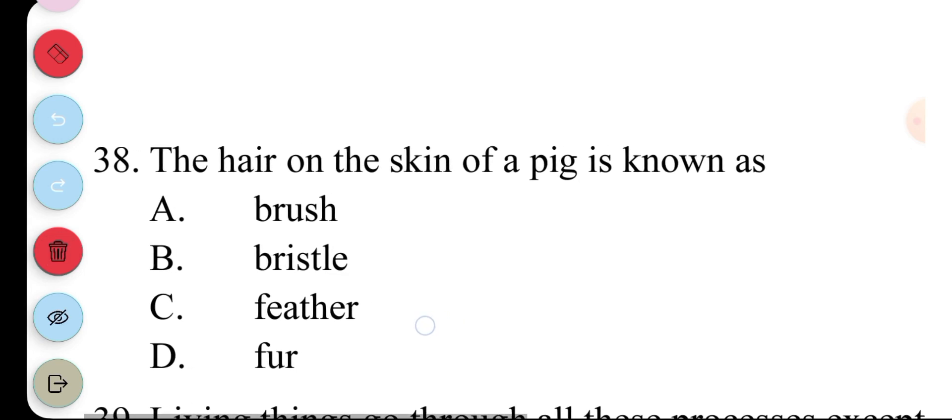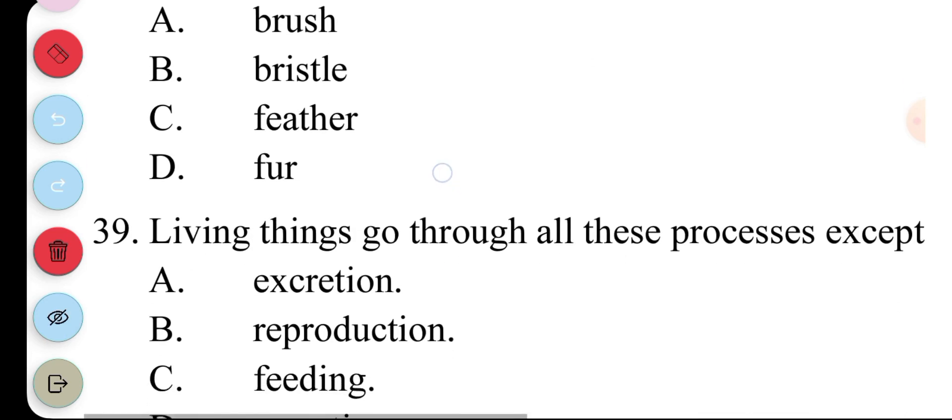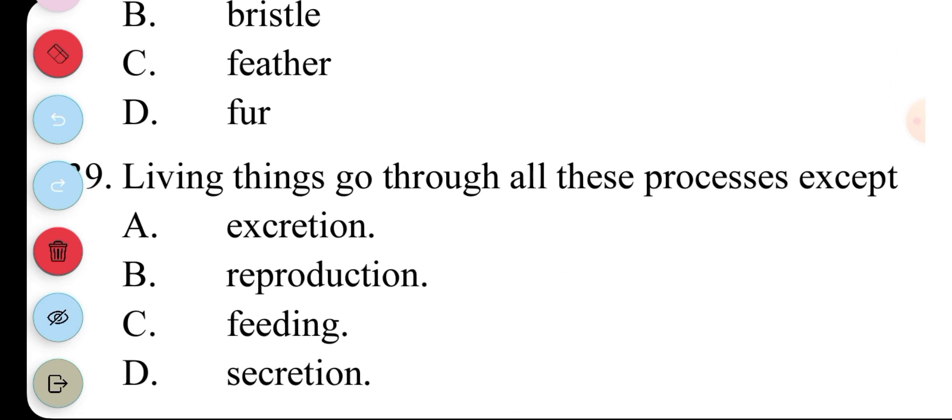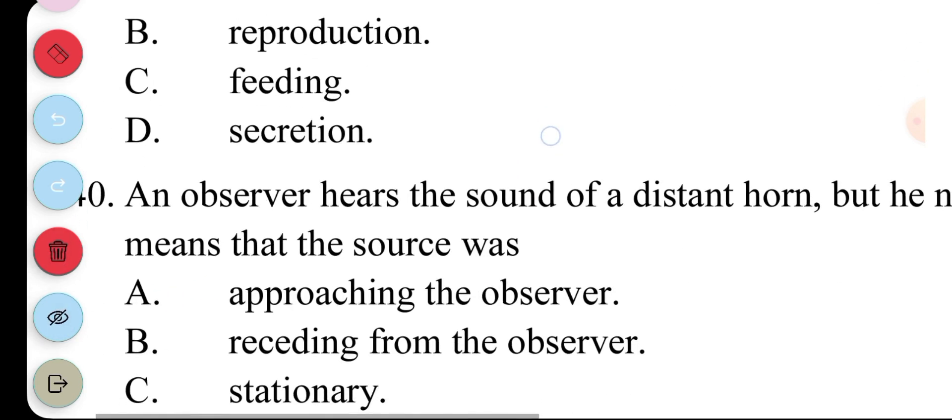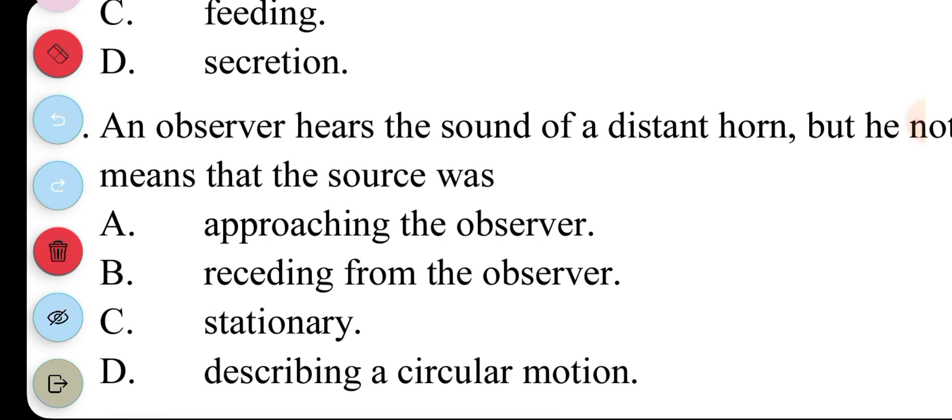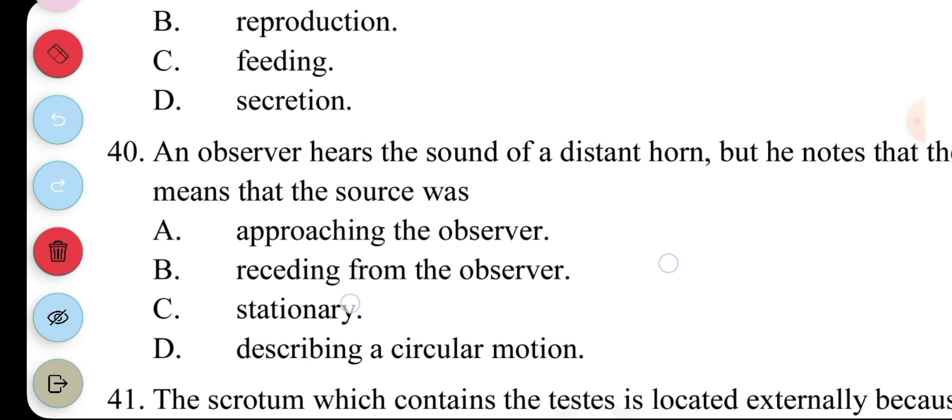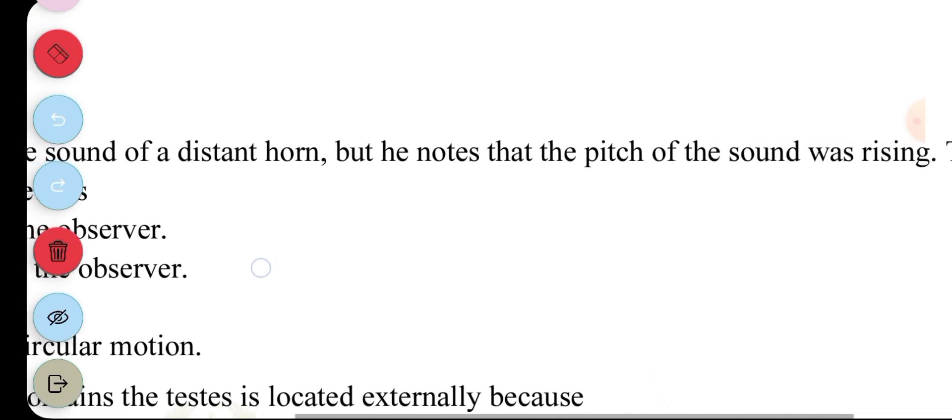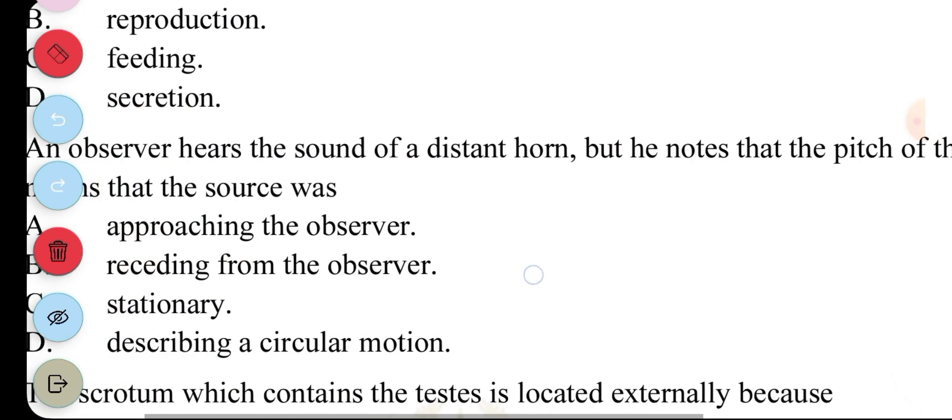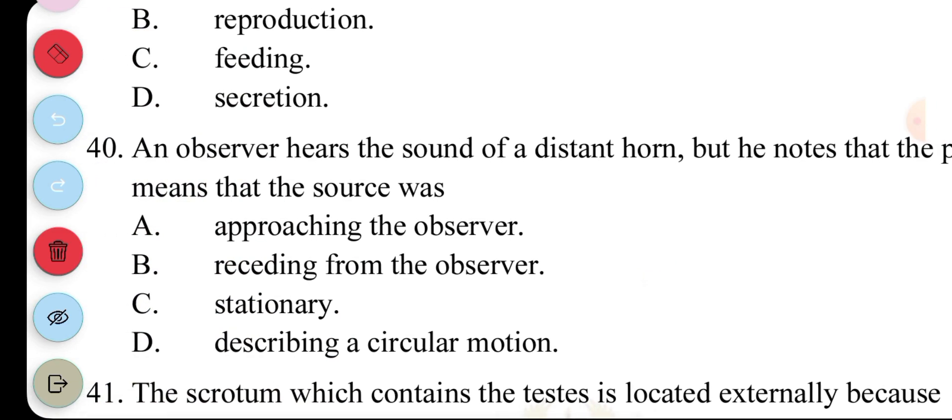38. The hair on the skin of a pig is known as... A. Brush. B. Bristle. C. Feather. D. Fur. The answer to question 38 is... B. Bristle. Living things go through all these processes except... A. Excretion. B. Reproduction. C. Feeding. D. Secretion. The answer to question 39 is... D. Secretion. 40. An observer hears the sound of a distant horn. But he notes that... The pitch of the sound was rising. This means that... The source was... A. Approaching the observer. B. Receding from the observer. C. Stationary. D. Describing a circular motion. Answer to question 40 is... A. Approaching the observer.